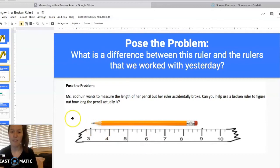If you said that this ruler doesn't have a zero at the beginning and it doesn't end in a 12, you're right. So Mrs. Beaudoin wants us to help her measure the length of her pencil with this broken ruler. Now lucky for us, we already have the tools to help her solve this problem. We'll come back to it in just a minute.